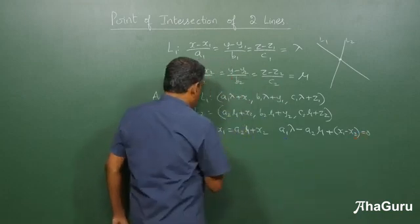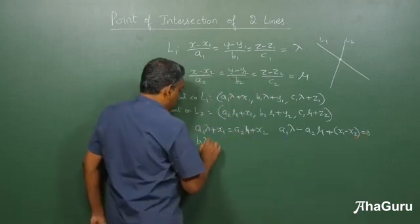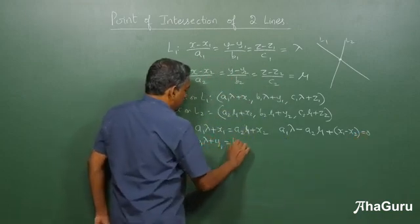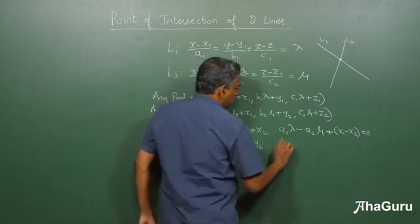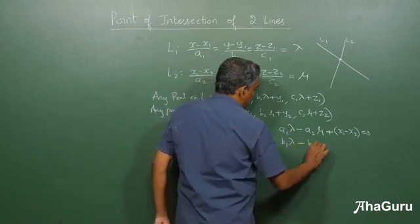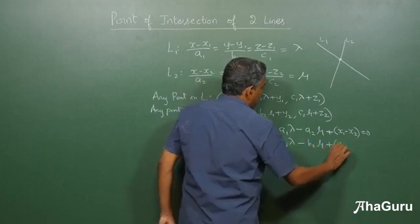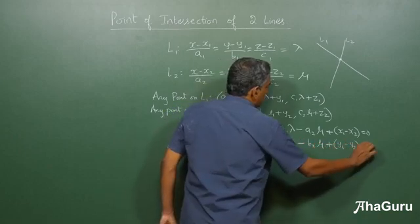Similarly, you will have b1 lambda plus y1 is b2 mu plus y2, so b1 lambda minus b2 mu plus y1 minus y2 is 0.